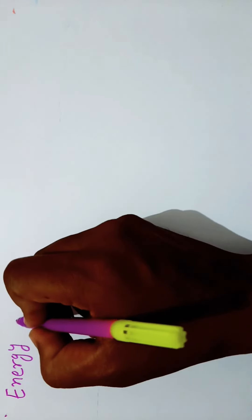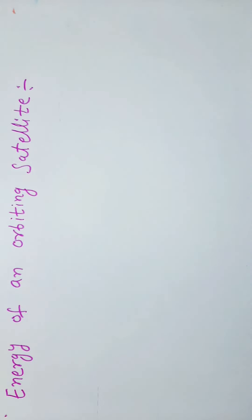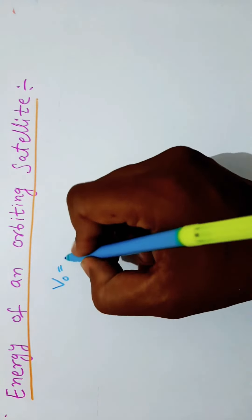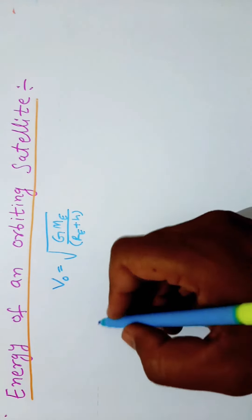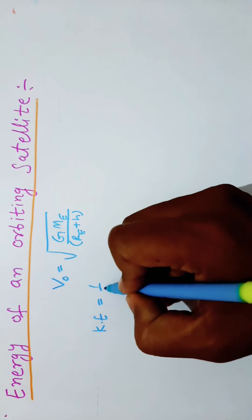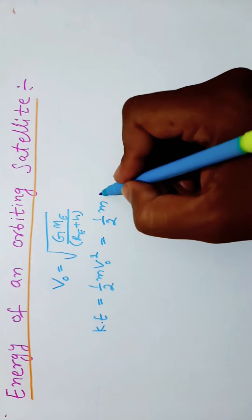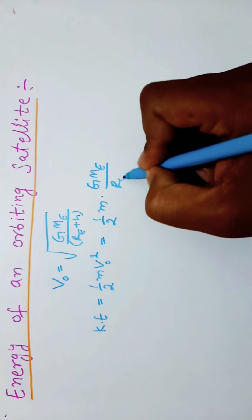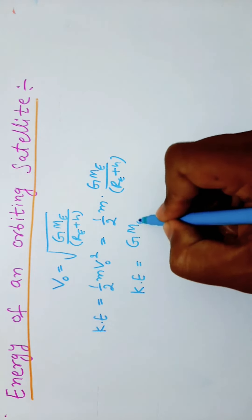Energy of an Orbiting Satellite. We know the orbital velocity of a satellite V0 is equal to the square root of G times ME divided by (RE plus H). The kinetic energy of the satellite is equal to half M V0 squared, which gives us half M times GME divided by (RE plus H). So kinetic energy equals G times ME times small m divided by 2(RE plus H).